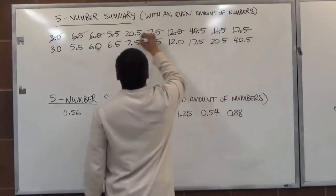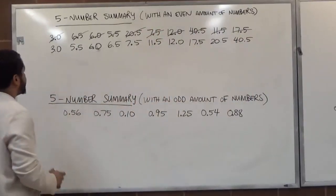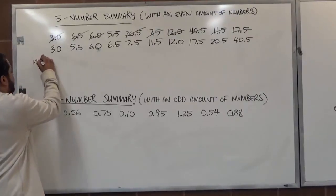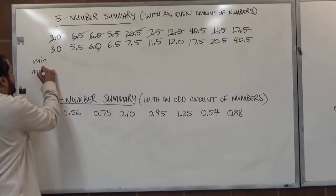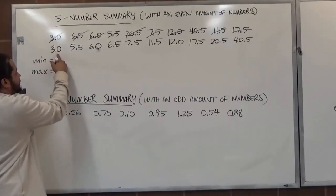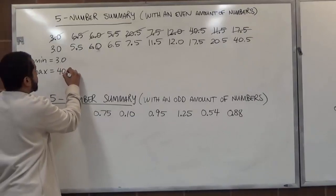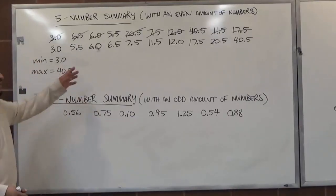So now once we have the digits in order and sorted, what we want to do is look at the first and the last originally because it's the min and the max. So here we have the min, here we have the max. The minimum value will be 3.0. The maximum value will be 40.5. Now that we have those taken out of the way, let's find the median.